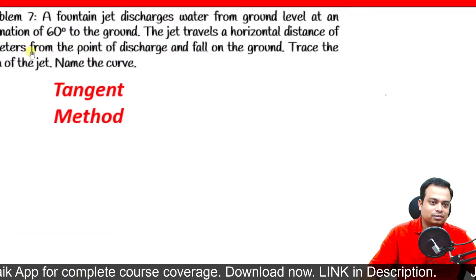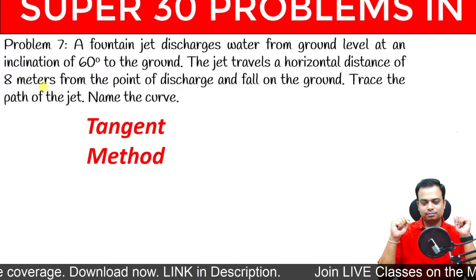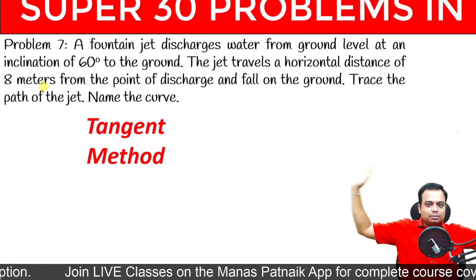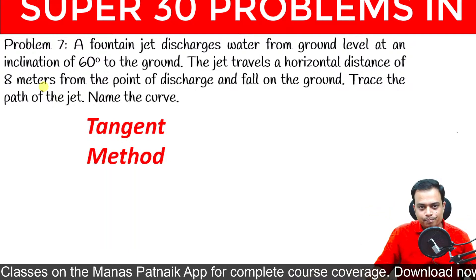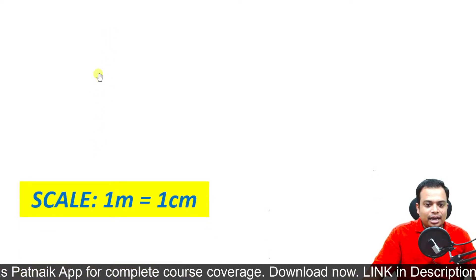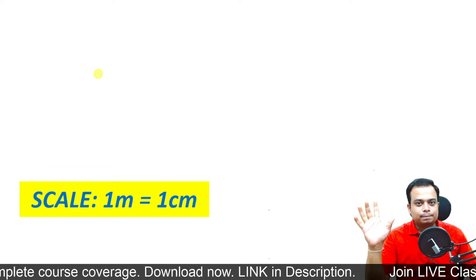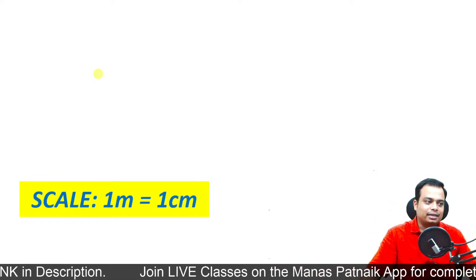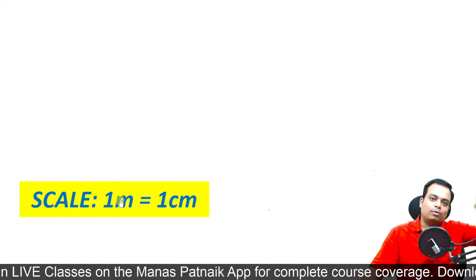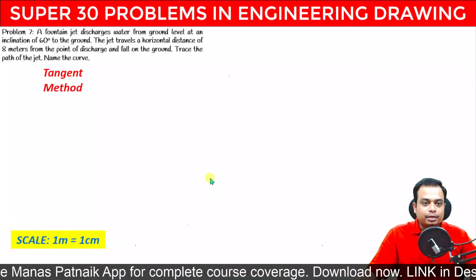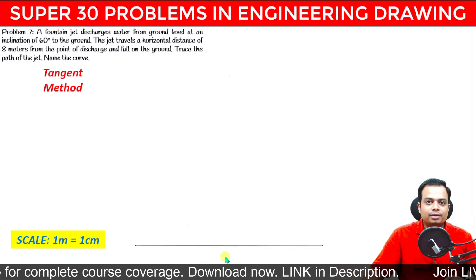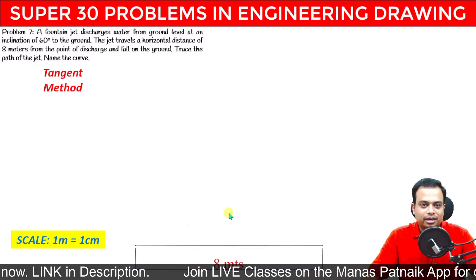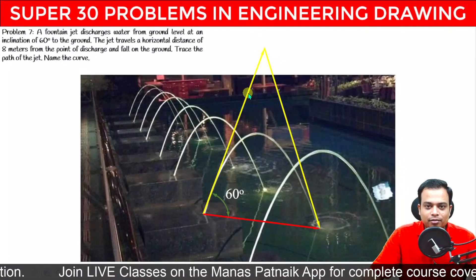Yaha pe to 8 meters diya hua hai, humari drawing sheet jo hai wo to lagbhag ek meter ki hai, so hum 8 meter kaise draw karenge? Can you draw a line of 8 meters? Is it possible? No sir, 8 meter ki line khichna to matlab kitni ho jayegi, bahut saari drawing sheets lag jayenge. So what we will do is we need to take the help of a scale, and that scale is 1 meter equals 1 centimeter. Matlab koi bhi dimension asliyat mein jo ek meter ke barabar hai, aap drawing sheet mein usko ek centimeter ke banayenge. The first thing to do is simply make a line, and this line will be 8 centimeters on this drawing sheet, but in reality asliyat mein yeh 8 meter ke barabar hai.